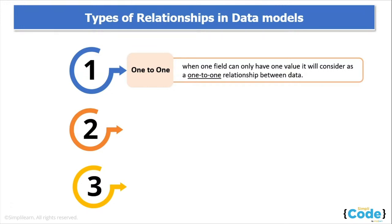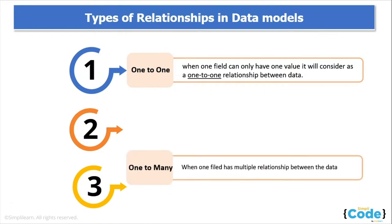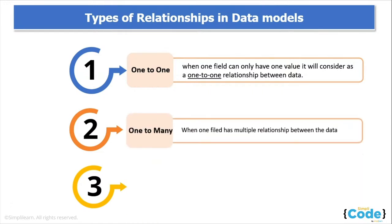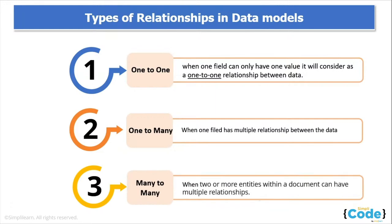MongoDB supports multiple ways to model relationships between entities in a data model. The first is one-to-one, where one value is associated with only one document — a single relationship between two connected entities. Next is one-to-many, where one value can be associated with more than one document or value at the same time. Finally, many-to-many is when two or more entities within a document can have multiple relationships; multiple documents can be associated with each other.